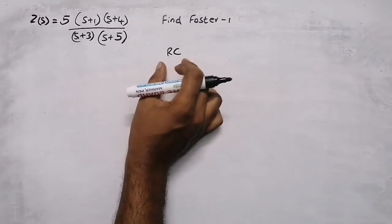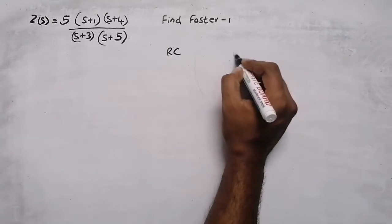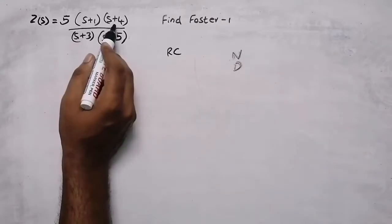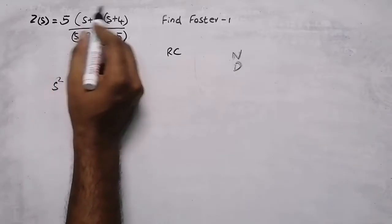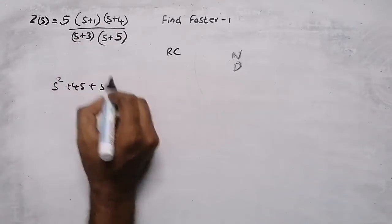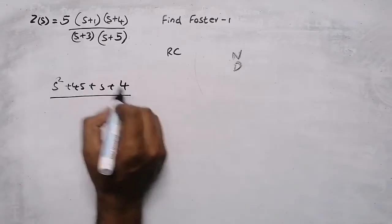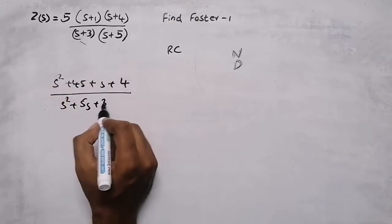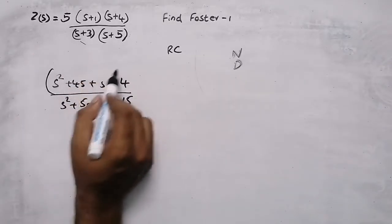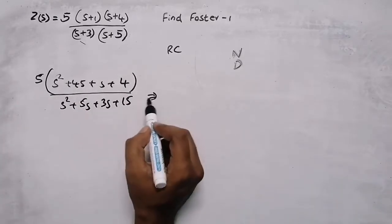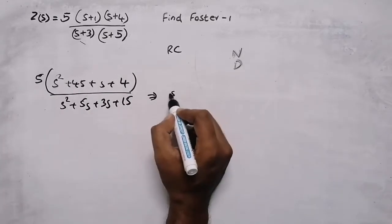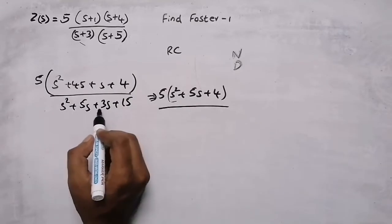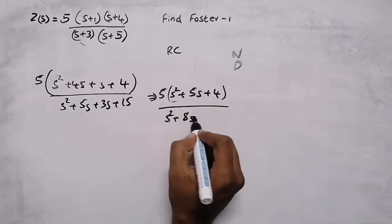After finding the network, you need to do partial fraction. But before doing partial fraction, you need to know the degree of numerator and degree of denominator. Open the brackets and multiply. After simplification, the numerator becomes 5s squared plus 5s plus 4, multiplied by 5, giving 5s squared plus 25s plus 20, and the denominator is s squared plus 8s plus 15.